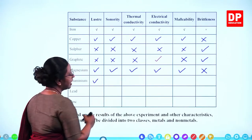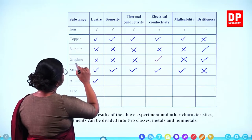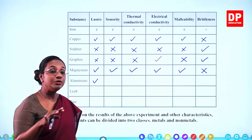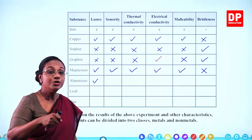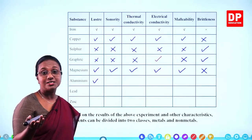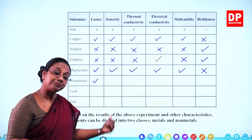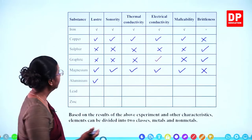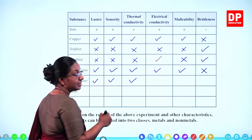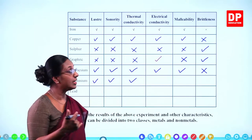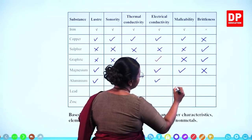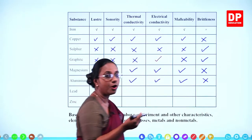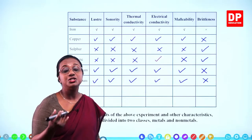Aluminium also has the lustre shine. Copper, magnesium, aluminium — they all have the shine. In the lab, magnesium might be covered with an oxide layer, but when you scrape it with sandpaper you will see the shine. Aluminium sometimes looks tarnished but it does have the shine. It makes the sonorous sound, conducts heat — that is why we use aluminium utensils at home — conducts electricity, is malleable, and is not brittle.